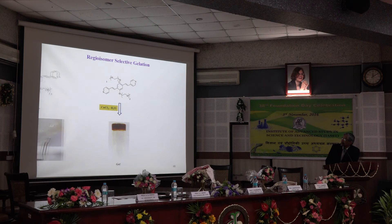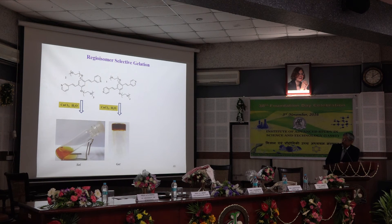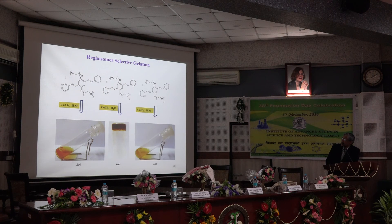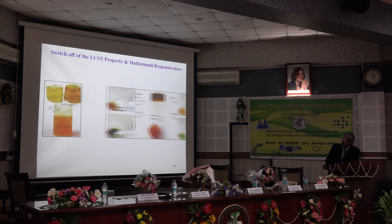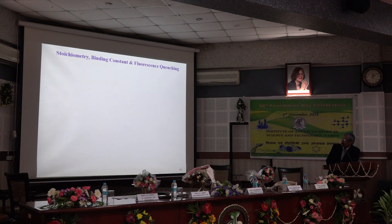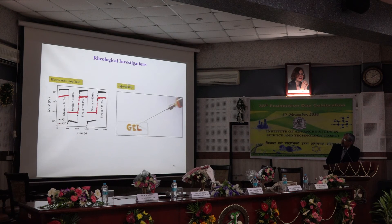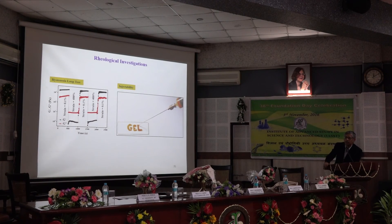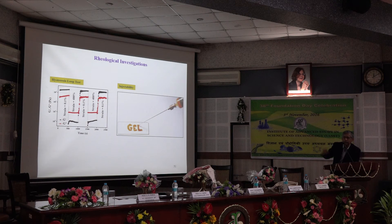This is regioisomer-selective gelation: whether it is pyridine in the four, three, or two position can be varied very easily, and we can form different types of materials. You can actually write these materials and make liquid crystals. You can write IASST here, and depending on the temperature, we can have different optical birefringence — so the color will be different. We can also control by humidity: just by reading the humidity, we can give a broad color sense using this type of advanced material.